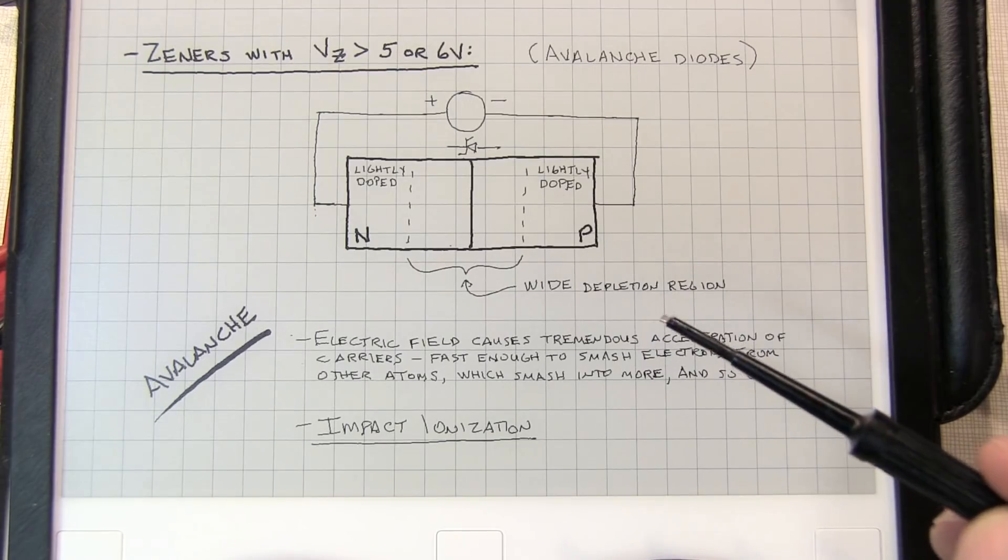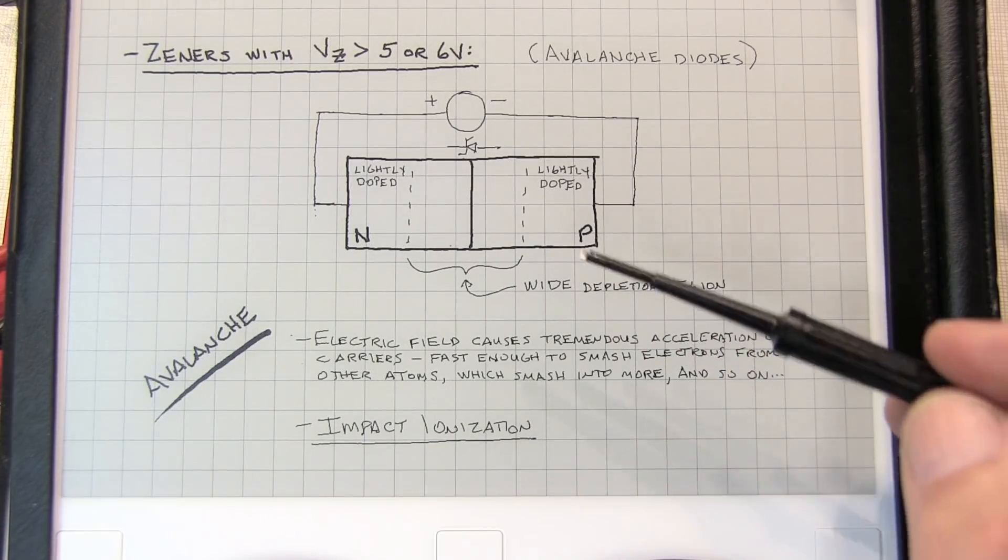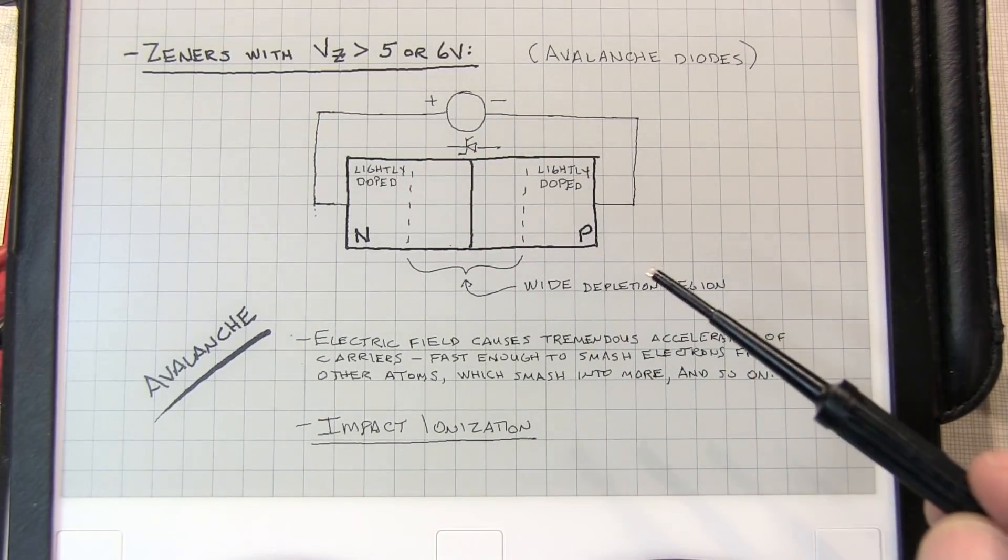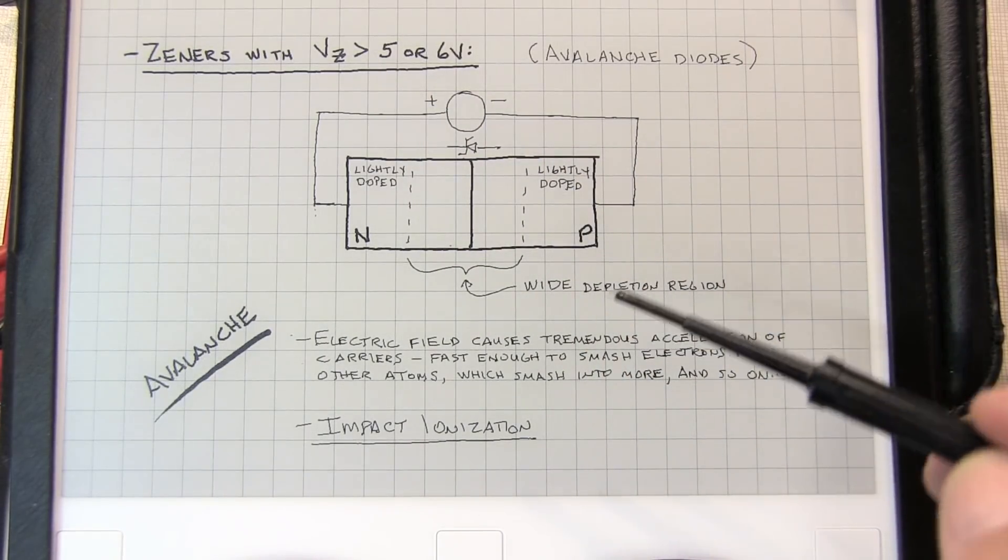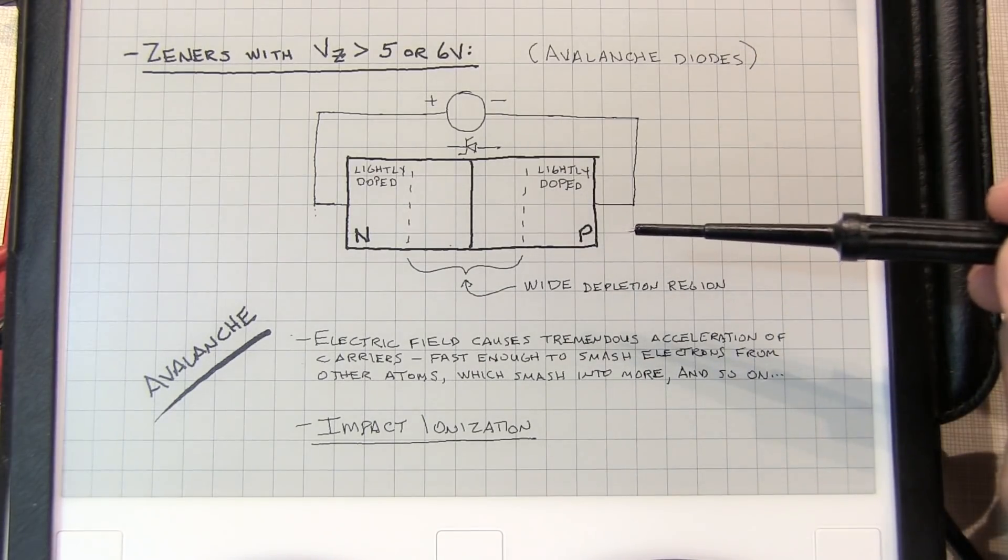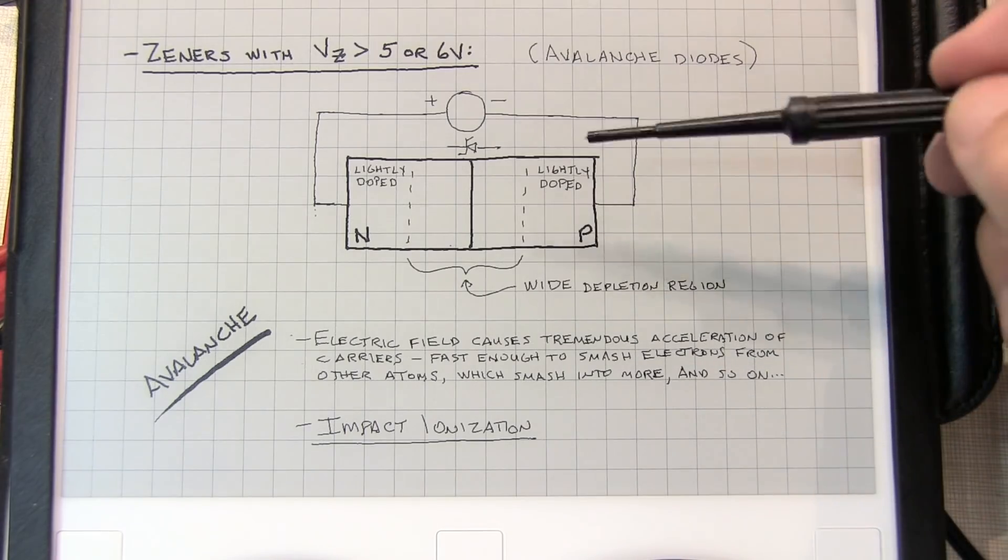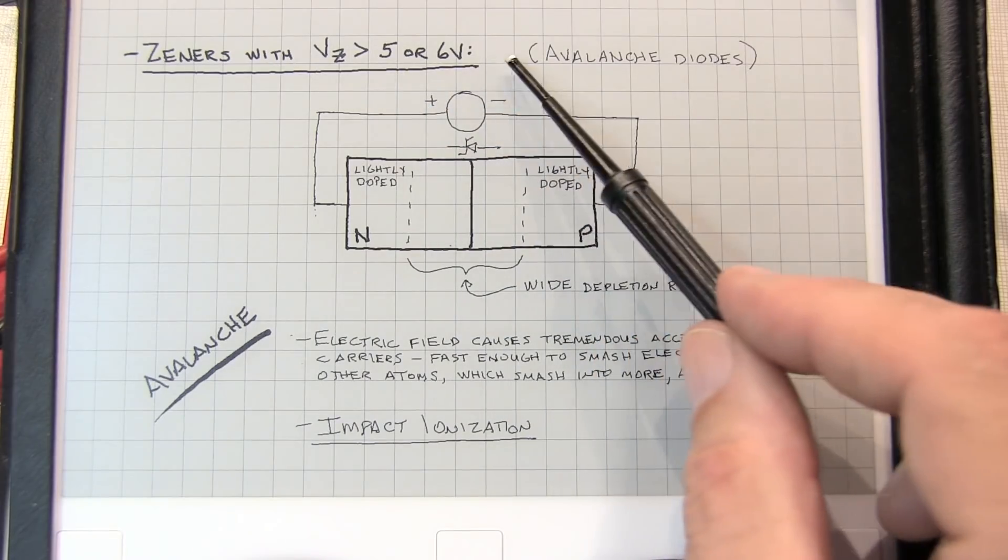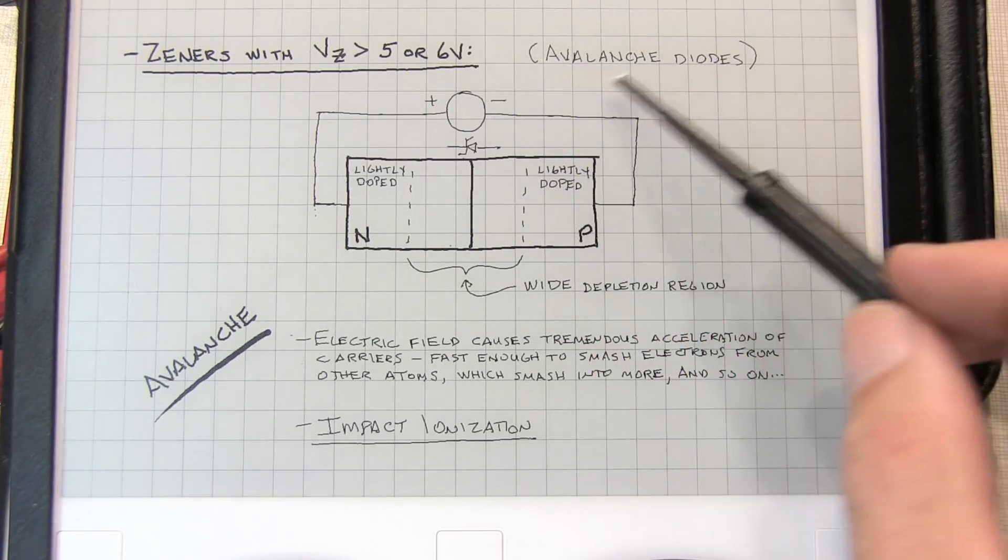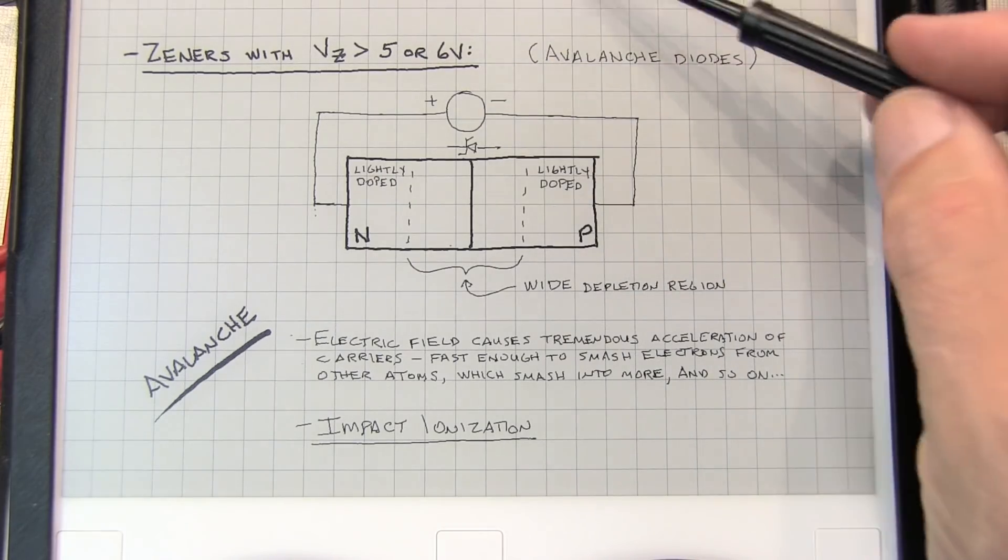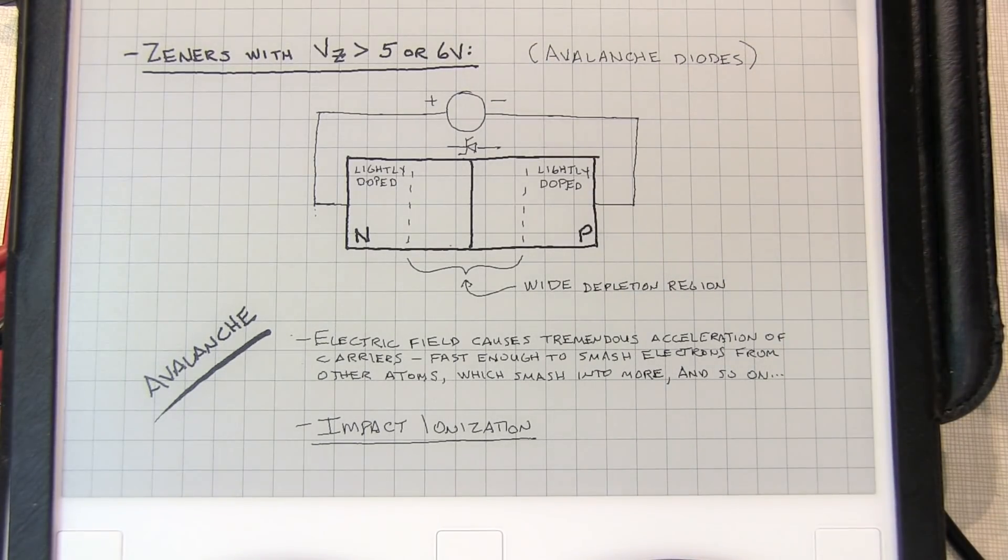The reality is that Zener diodes, even though they're all called Zeners, most of them that are above 5 or 6 volts are actually avalanche diodes. Even most of the Zeners will have some of these two different properties operating at the same time. You'll get some avalanche effect and some Zener effect. Those rated at higher voltages will be more avalanche than Zener, and those rated at lower voltages will be more Zener than avalanche. Let's take a look at the two on the curve tracer.